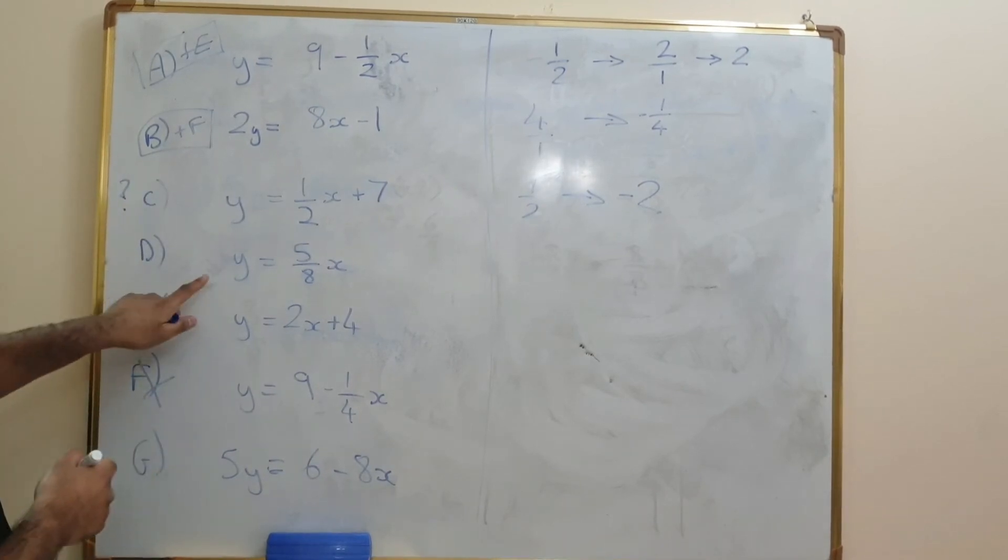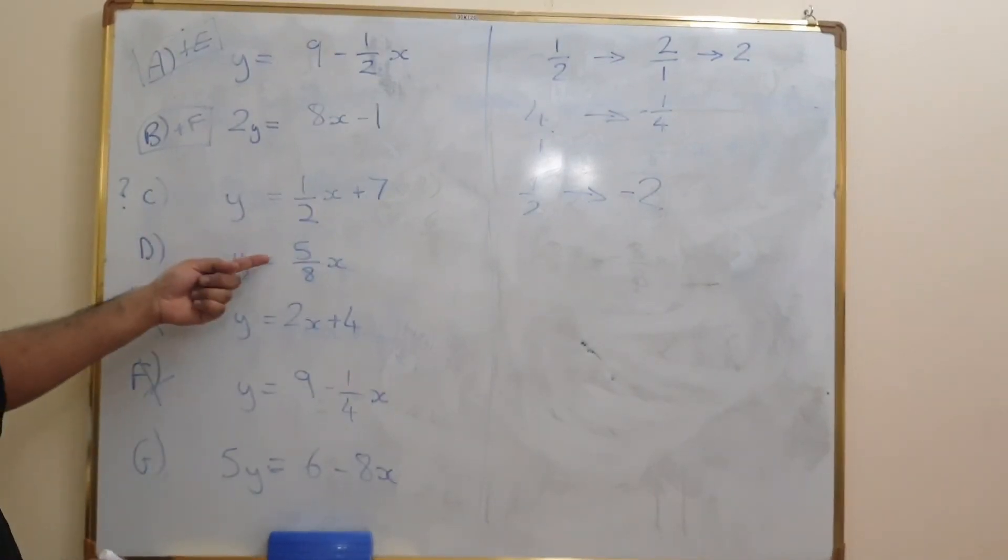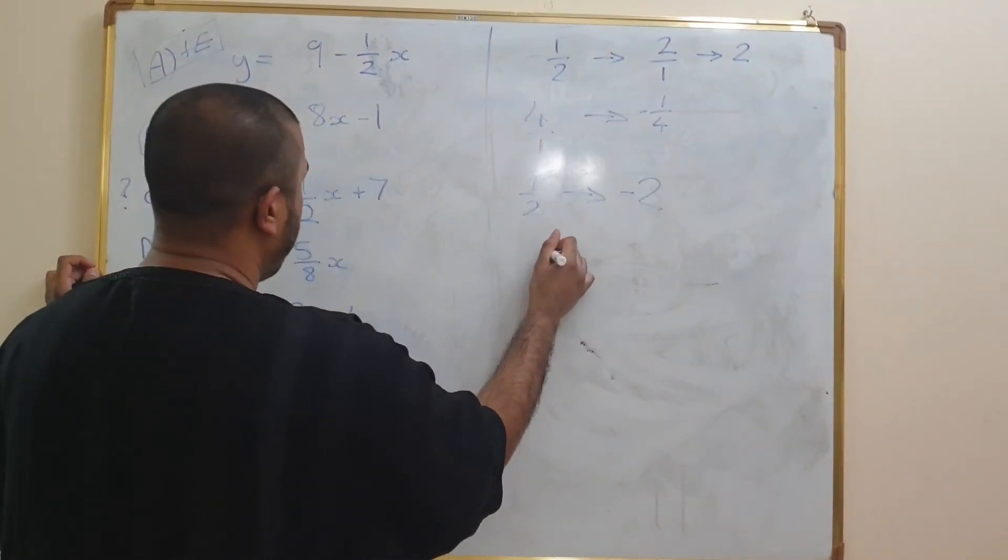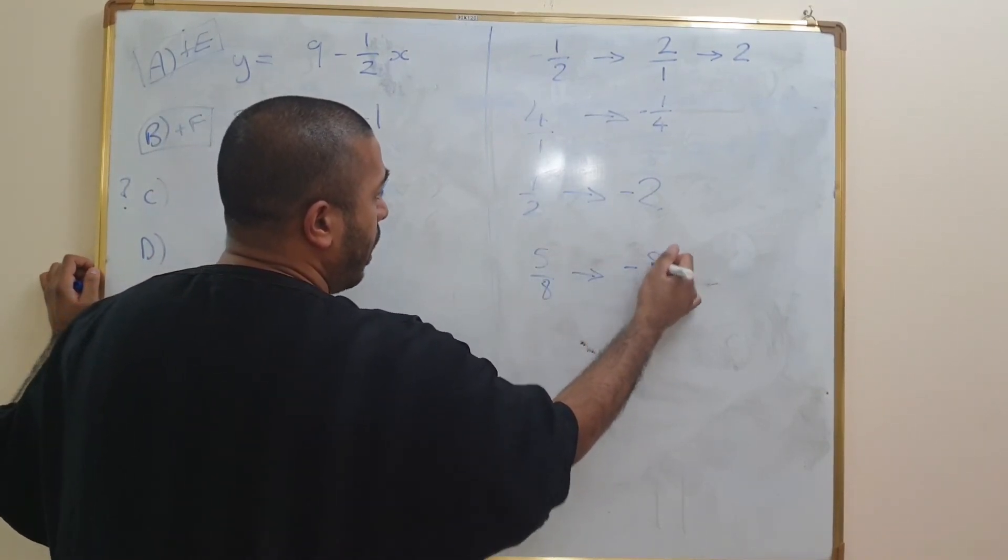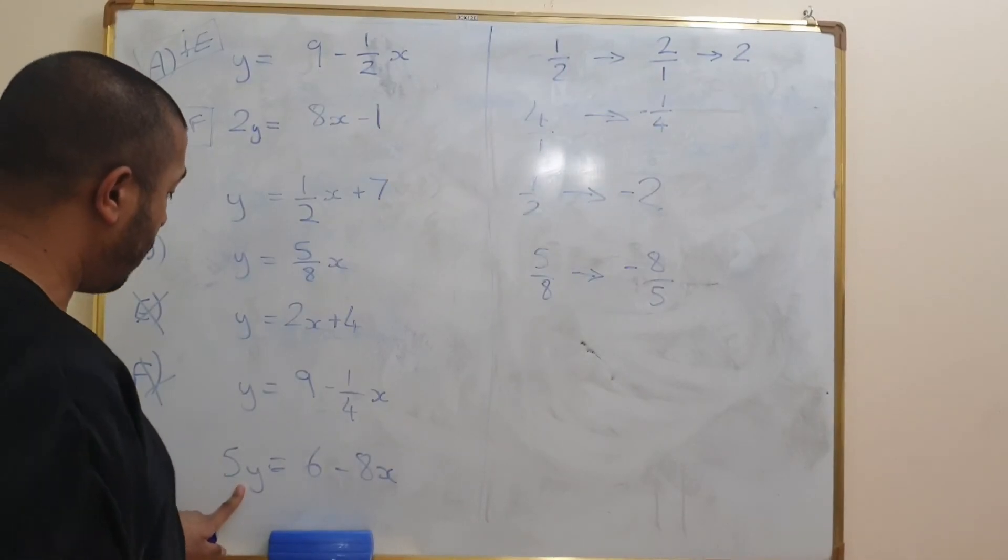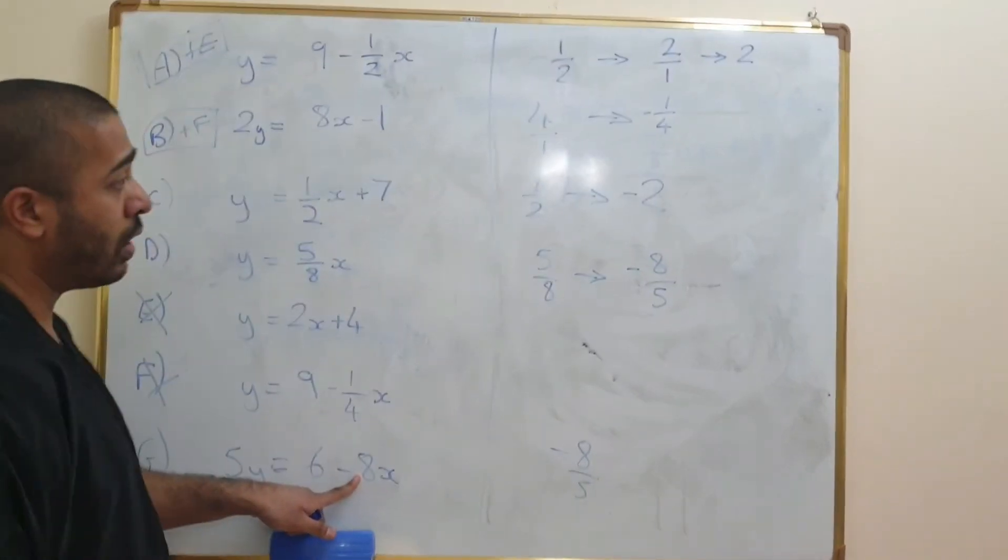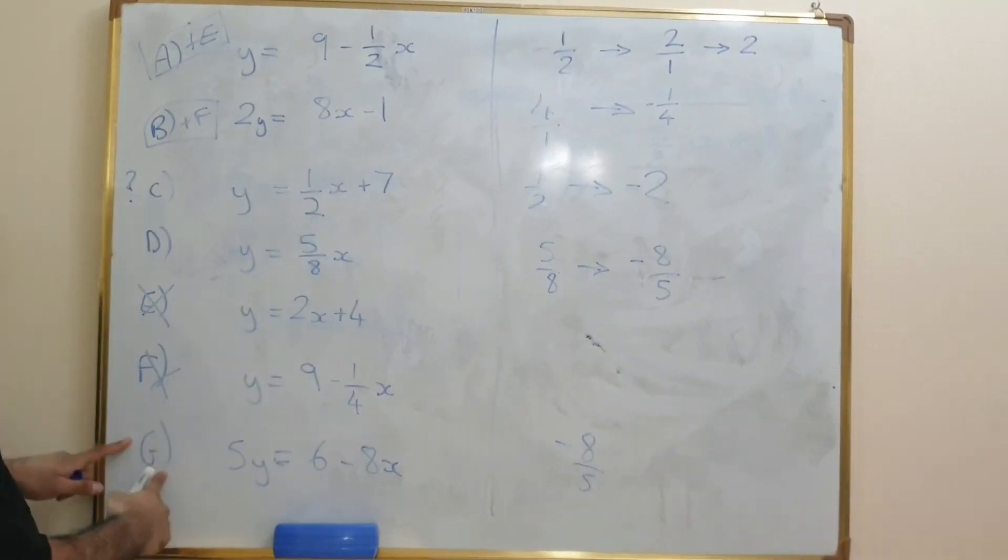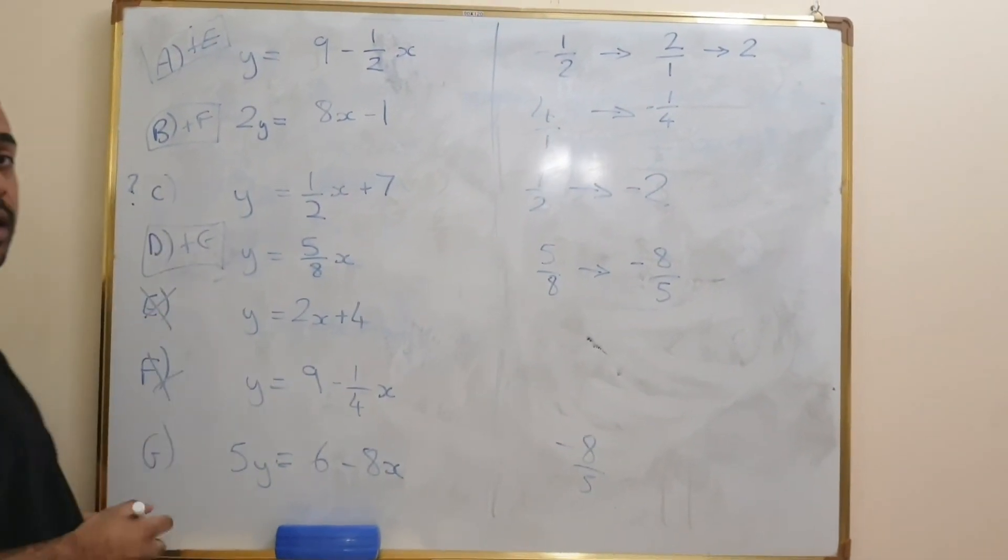Okay, perhaps it is C. Let's look at D. D is 8Y equals 5X. So its negative reciprocal is minus 8 over 5. Well, I can see that G is going to match with that because if I divide the whole thing by 5 because it's 5Y, I need to have Y on its own. So if I divide that by 5, it's going to be negative 8 over 5X over here. And that's what I need over there. So D and G go together, which means that C is the odd one out.